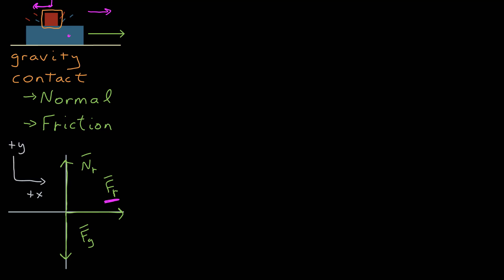Now we need a coordinate system, and we can implement Newton's second law, which says the vector sum of the forces on that one object, red, is equal to the mass of red times the acceleration of red.